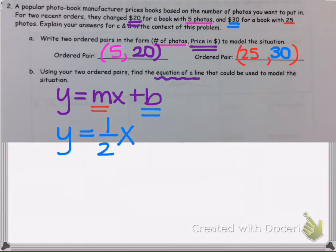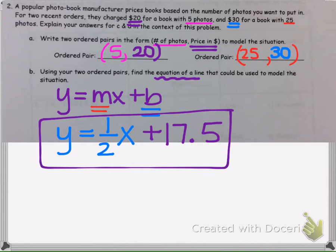Okay, so now we have our b value. This is also correct if we put a 0 there. So that was part b. It said, using your two ordered pairs, write an equation to model this situation.